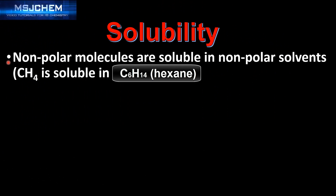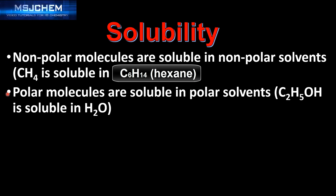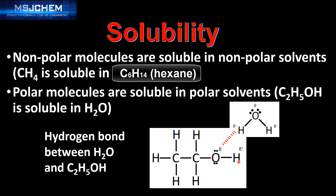Next we look at solubility. Non-polar molecules are soluble in non-polar solvents, and polar molecules are soluble in polar solvents. For example, C2H5OH (ethanol) is soluble in H2O (water). Ethanol has an OH group which means it can form hydrogen bonds between itself and a water molecule, and this is the reason for ethanol's solubility in water.